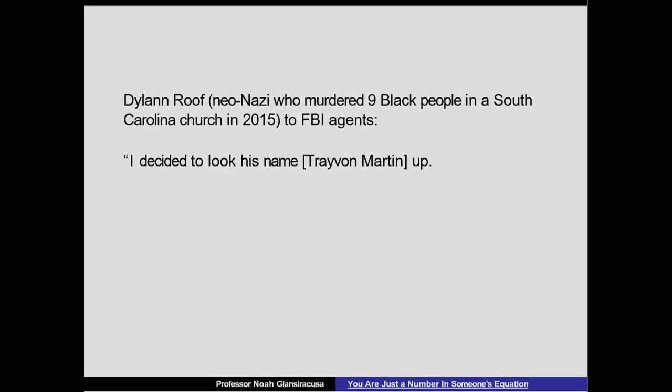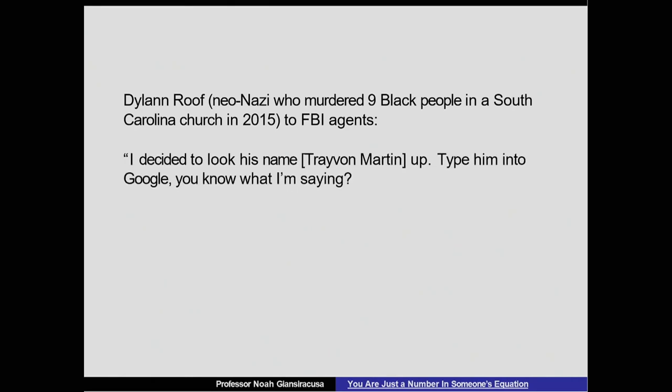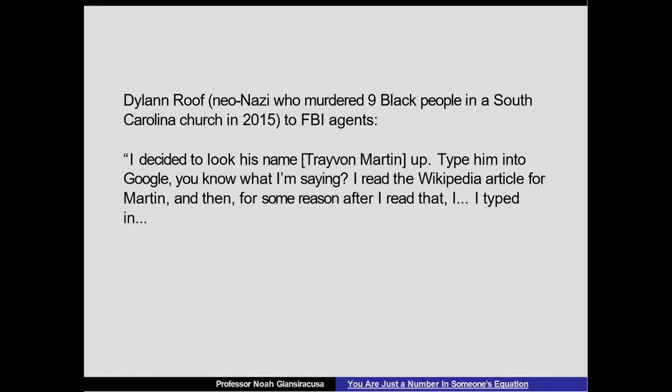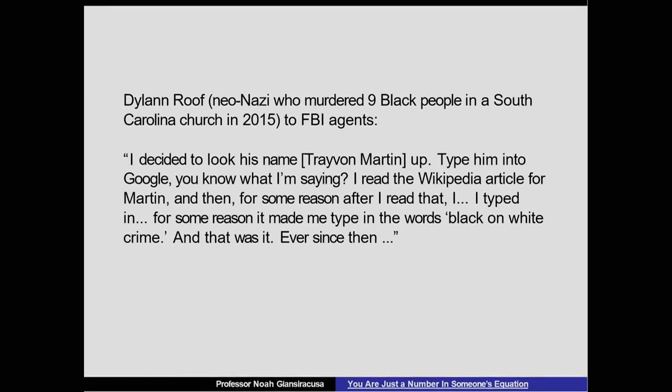Where did he get these ideas? How did he... First of all, who knows, and we shouldn't trust a word he says because he's a murderer. Why give him any credit? But it's interesting just to see what he did say. He literally said, I decided to look up Trayvon Martin's name, type him into Google, you know what I'm saying? I read the Wikipedia article for Martin, and then for some reason, after I read that, I typed in... For some reason, it made me type in the words black-on-white crime. And that was it, ever since. He got radicalized, or he claims he got radicalized, basically from a toxic Google search.